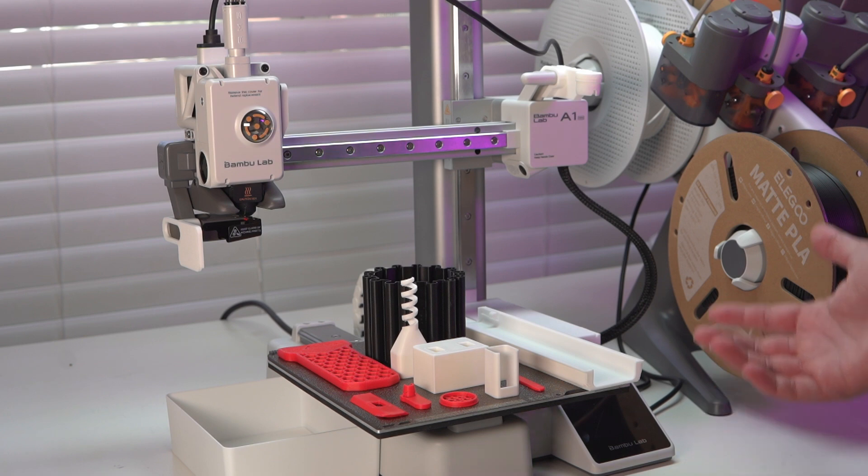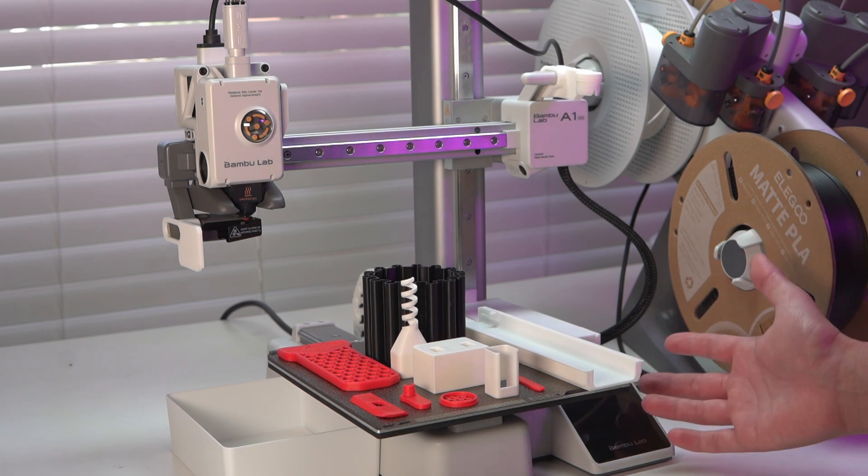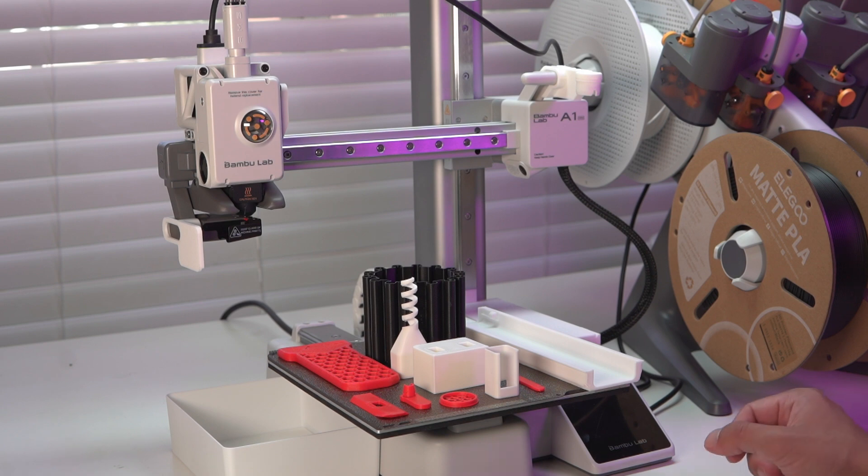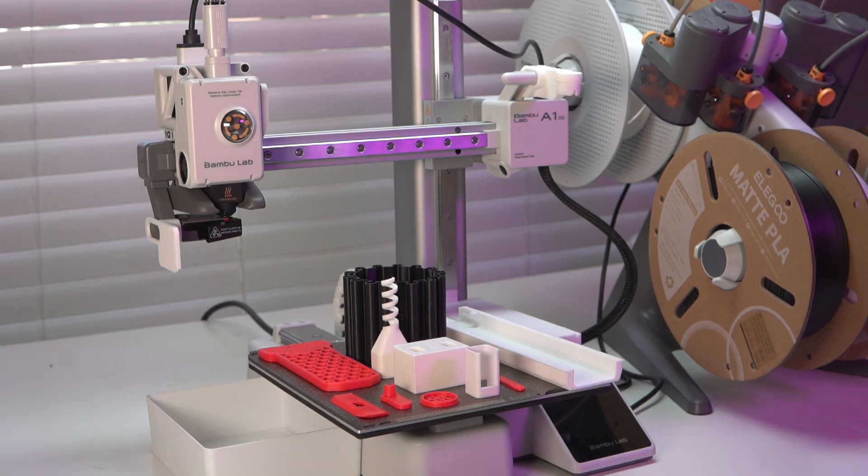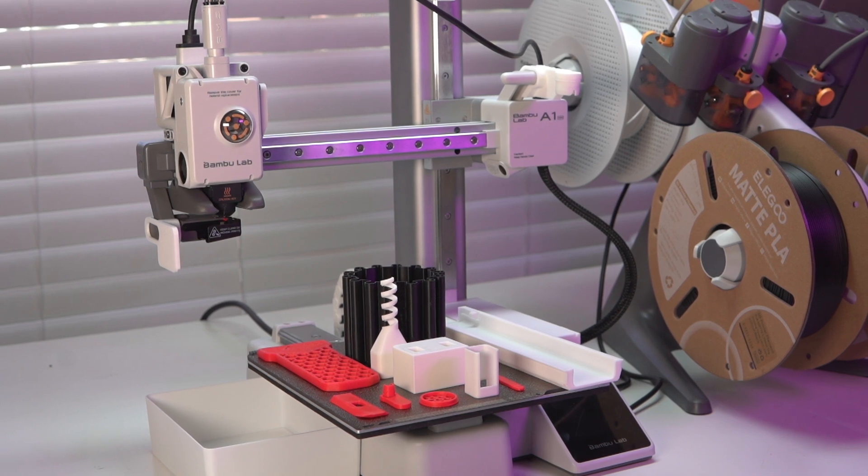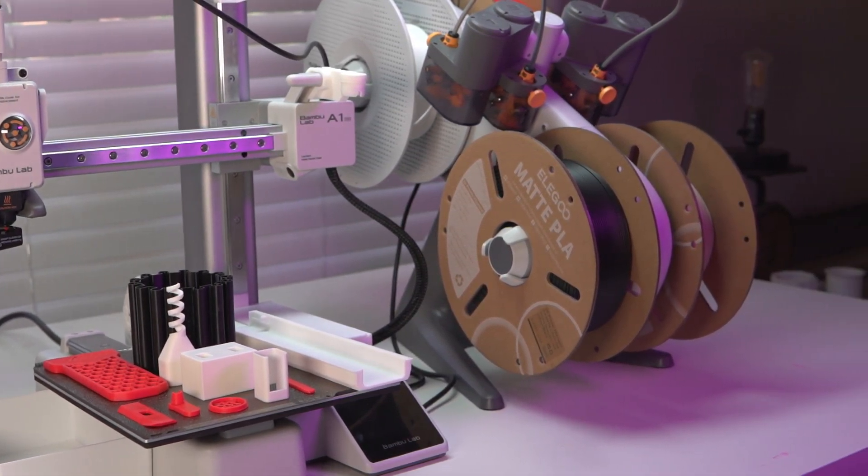Here we have the Bamboo Lab A1 Mini, which is already an absolute beast of a 3D printer, but there's a couple of things that we could print out for it to make it work better and last a lot longer, and they all take less than one hour. If you are coming from that other A1 Mini mods video, you may notice something a little bit new over here.